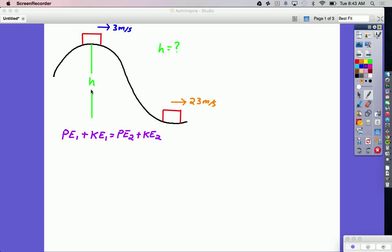For this we're going to use conservation of energy. We use conservation of energy whenever we know something about an object at one spot, like we know how fast it's going and we know where it is, and we're trying to find out things about it at another spot.